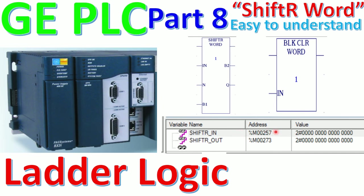I also have a shift right input here, and here is the number of shifts. For example, one bit one time — we can set that here. Here is the output of shift right, which also has 16 bits total. And this is the block clear word that we already covered in the previous video.